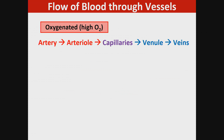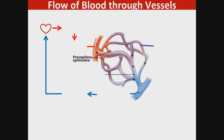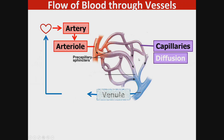Blood flows leaving the heart as oxygenated blood through arteries and arterioles. Diffusion happens in the capillaries, and then deoxygenated blood comes back to the heart through the venules and veins. So from the heart, blood leaves through the arteries, then the arterioles, enters a capillary bed where diffusion happens, then comes back through the venule and the vein and back to the heart.